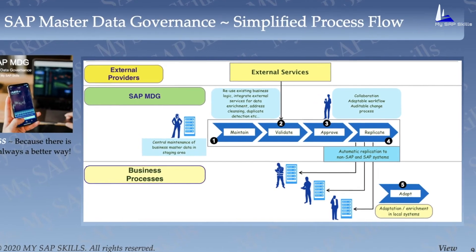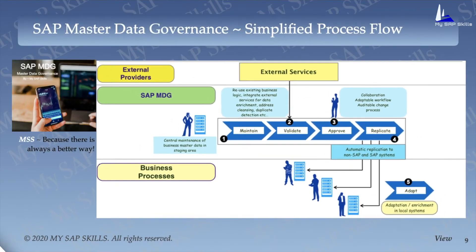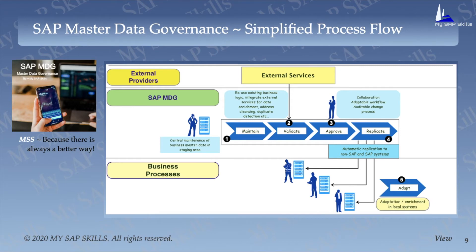Let's take a look at the SAP Master Data Governance Simplified Process Flow. As we can see on screen, we can simplify the governance mechanism in a three-layer structure. An external service provider connects to SAP Master Data Governance to verify all sorts of organizational master data. In the maintenance process, a change request is first created and business data is stored in the SAP MDG staging area — a MDG database where all inactive maintenance data are stored during the master data validation process. SAP MDG conducts various tests on the reuse of existing business logic, incorporation of external resources for data enrichment, address validations, cleansing, and duplicate data detection during the validation process.